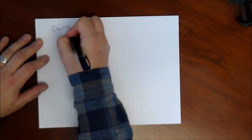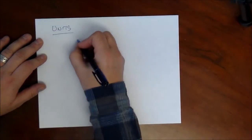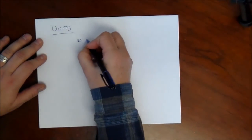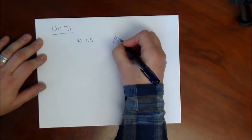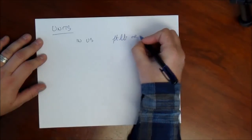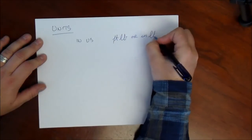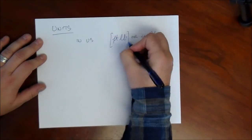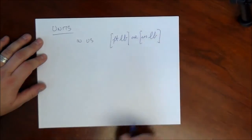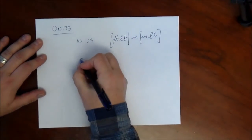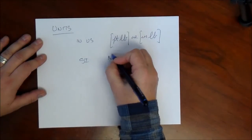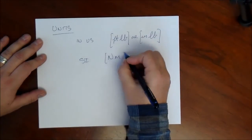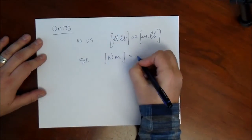A word on units when it comes to work. In the US system, the units are the foot-pound, or sometimes inch-pounds — force times distance. In the metric system, the units are almost exclusively the newton-meter, which is equal to a joule.